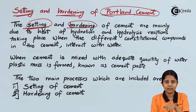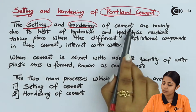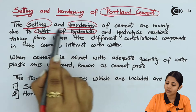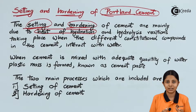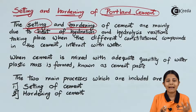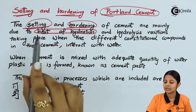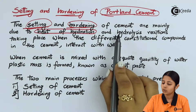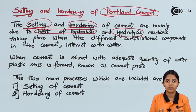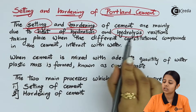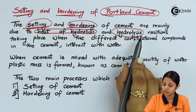First the cement has to set and then it has to harden. Both properties of cement are mainly due to heat of hydration. Whenever we take cement — a gray powder — and add water to it to form a paste, there is some heat evolved. It is an exothermic reaction, and that is why it is known as heat of hydration. The second important reaction is hydrolysis, wherein water gets mixed into the cement.